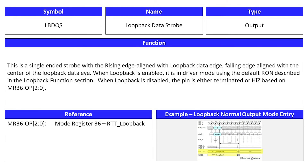Loopback data strobe is an output signal, and its symbol is LBDQS. This is a single-ended strobe with the rising edge aligned with loopback data edge, and the falling edge aligned with the center of loopback data. When loopback is enabled, it is in driver mode using the default RON described in the loopback function section. When loopback is disabled, the pin is either terminated or high-Z based on Mode Register 36, RTT loopback.